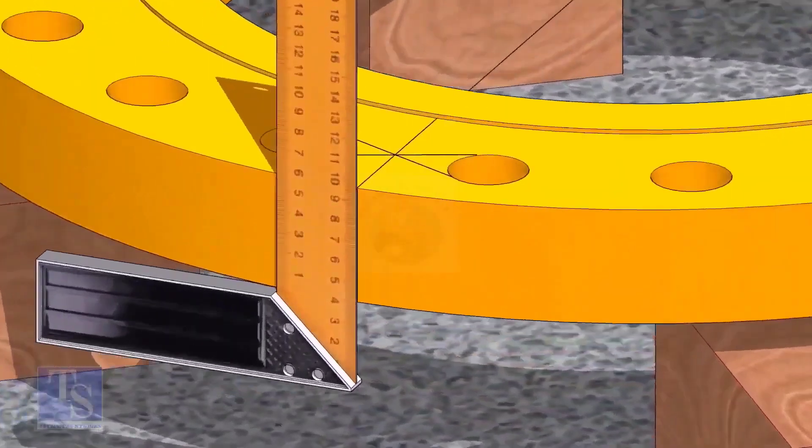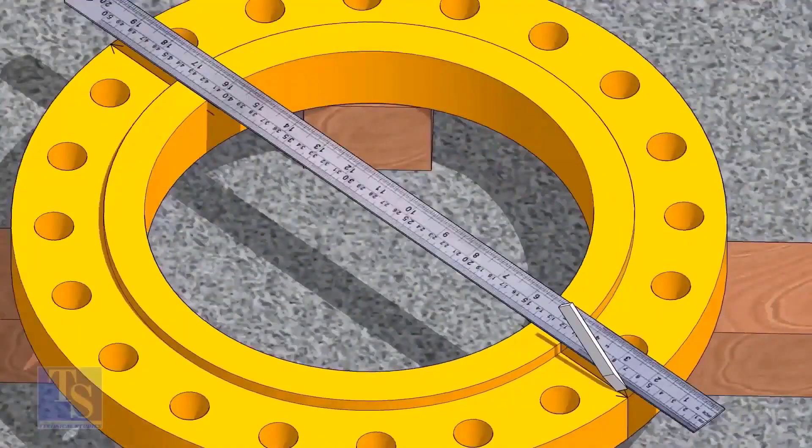Now, transfer the center line to the sides of the flange. Overturn the flange and transfer the center line on the back side of the flange.